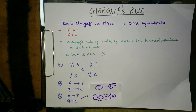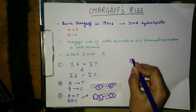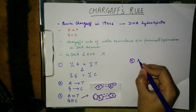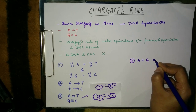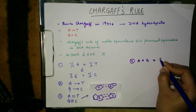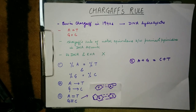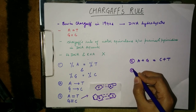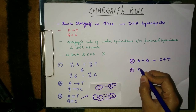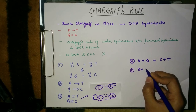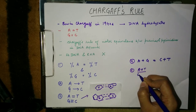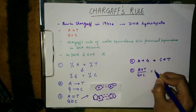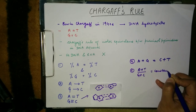The fourth point is that the concentration of the purines — that is adenine and guanine — is always equal to the concentration of the pyrimidines — that is cytosine and thymine. The fifth point is that the ratio of A plus T to G plus C is always a constant for a particular species.